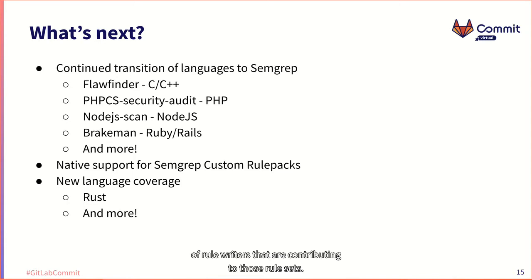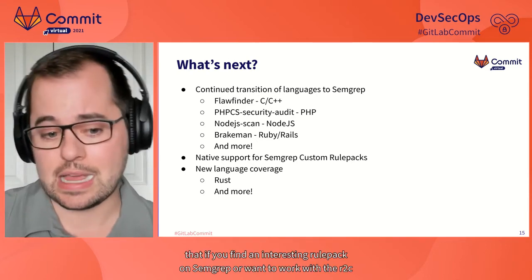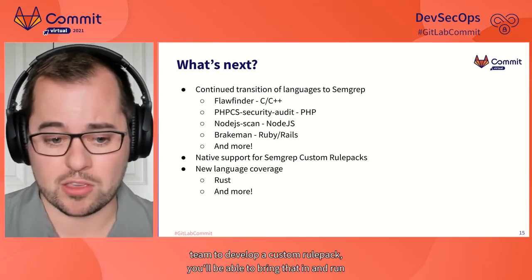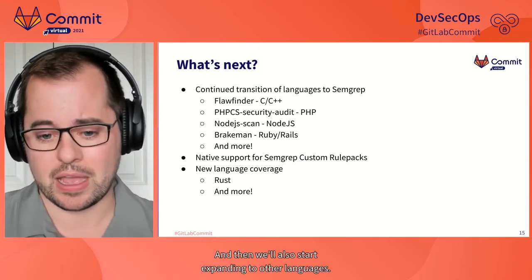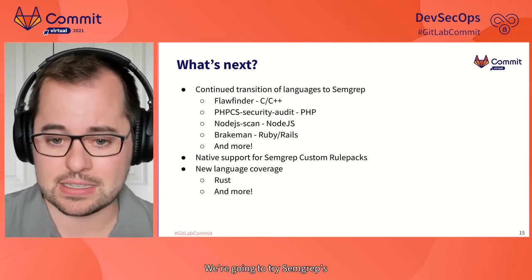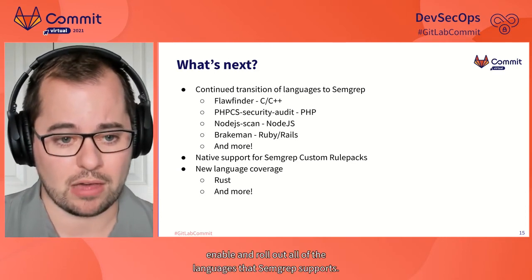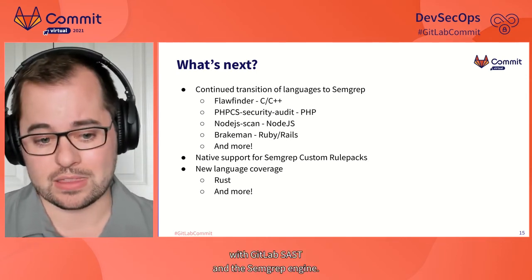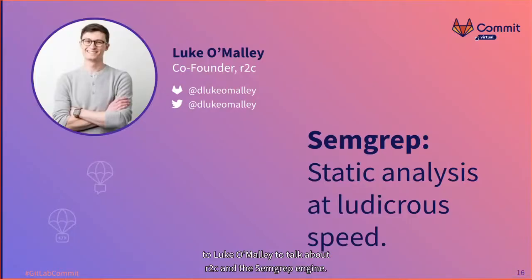We're only just getting started to unlock all the awesome functionality within Semgrep. Looking at what's next, we're going to continue migrating analyzers to Semgrep so you get the benefit of the rule engine and the community of rule writers contributing to those rule sets. We're also looking to add support for native Semgrep custom rule sets, so if you find an interesting rule pack or want to work with the R2C team to develop one, you'll be able to run that natively alongside GitLab SAST. We'll also start expanding to other languages, beginning with Semgrep's new beta language support for Rust.